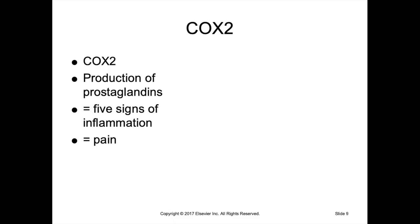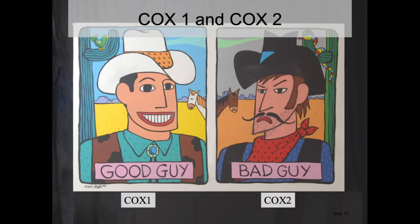COX-2 is the enzyme that produces prostaglandins associated with clinical signs of inflammation — the five key signs. From a simplistic view, COX-1 could be called the good guy and COX-2 the bad guy. COX-2 is responsible for the pain resulting from inflammation, while COX-1 is responsible for the protective features of the body. This view was especially prevalent in the 1990s when studies on non-steroidal anti-inflammatories were beginning.